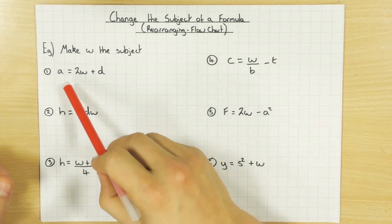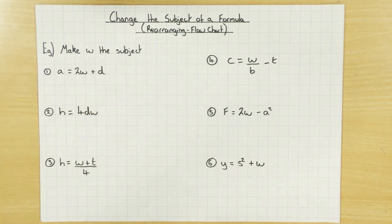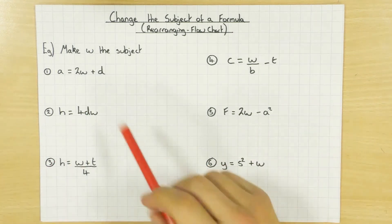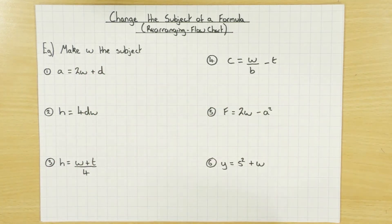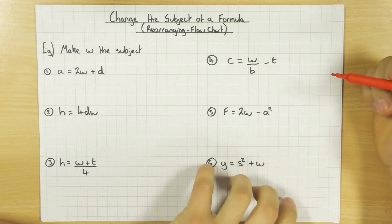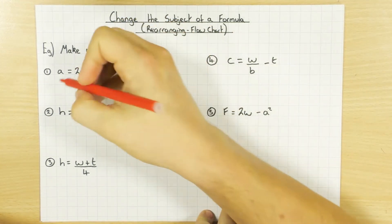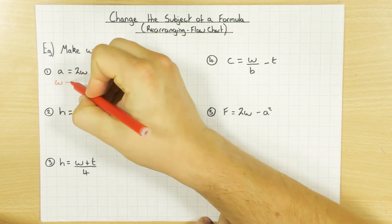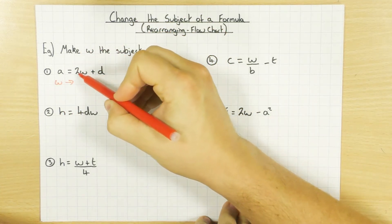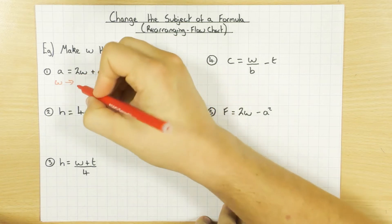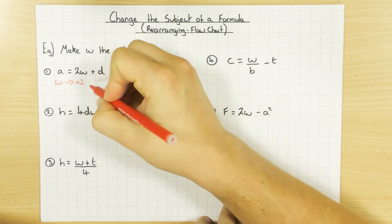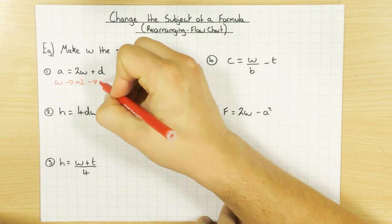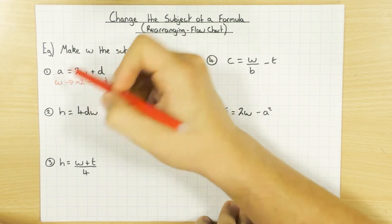It's a little bit different to solving equations because I've got different variables — I've got A's, W's and D's in the first example here. So what I'm going to do is rearrange it to make W the subject, which just means W equals and then something. So we're going to use the flowchart. If I want to make W the subject, I start off with W and then I have a look and see what I do to it. So I've got 2W here, so I'm going to times W by two first, then I add D, and then my answer equals A.